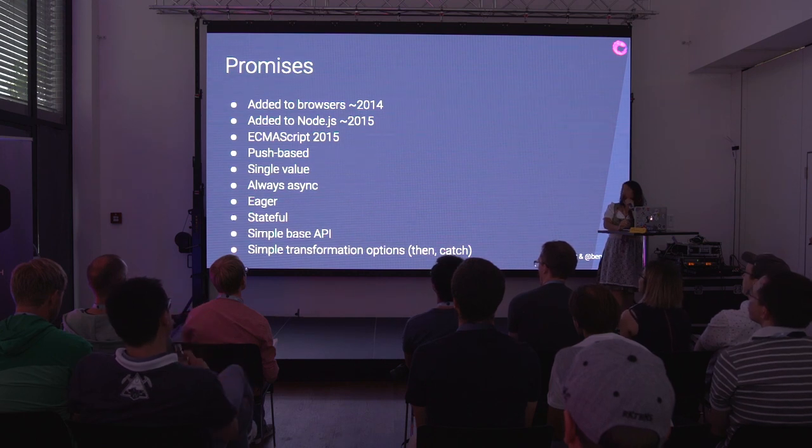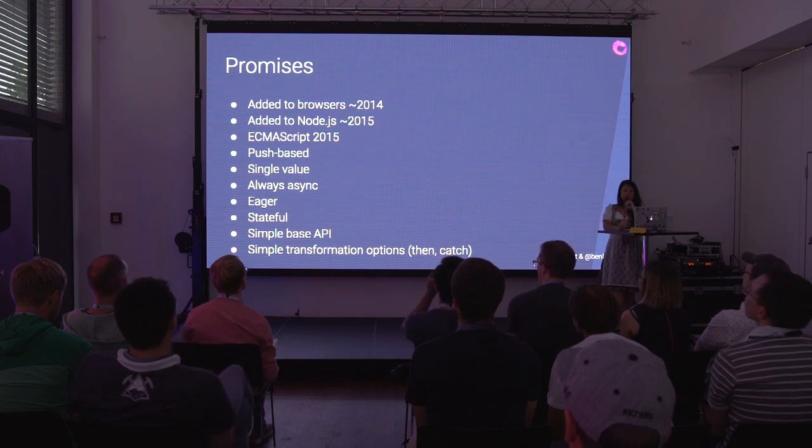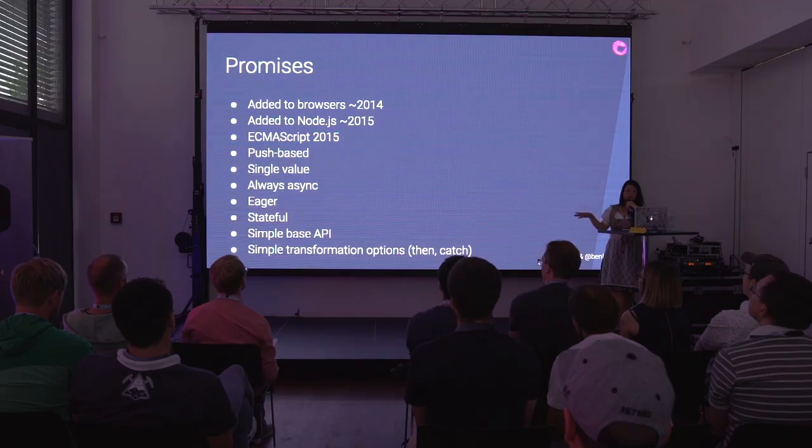Promises were added to browsers around 2014, then added to Node around 2015, included in the official ES2015 spec. They're push-based, single value, always async, eager, stateful, have a simple base API, and simple transformation options like then and catch. Overall, it's really easy to use.